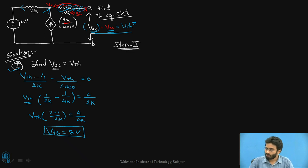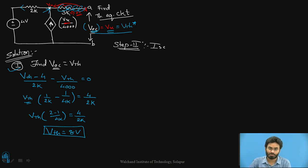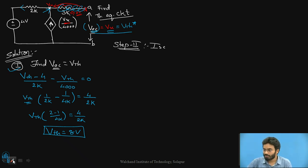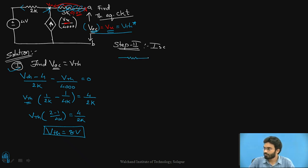Now let us move ahead to Step 2 where we calculate the short circuit current ISC. This is the basic difference when we have a combination of dependent and independent sources - we can't directly calculate RTH. Instead we calculate VOC, then calculate ISC by replacing the output with a short circuit, and apply Ohm's law: RTH equals VOC divided by ISC. Let's identify ISC.